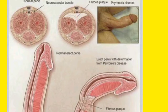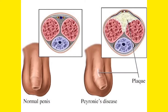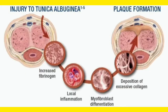Peyronie's disease — this curvature of the penis — is a very painful condition. During erection and during any kind of sexual activity, the male will have a lot of pain. Always remember: tunica albuginea has plaque in Peyronie's disease, and this causes curvature of the penis along with pain during erection.